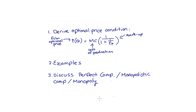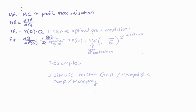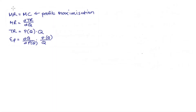So let's start with the first task of deriving that optimal pricing condition. To do this, we need to recall what I've listed in the top left-hand corner of the screen. Firstly, that the firm sets its price such that marginal revenue is equal to marginal cost, and that's in order to maximize profit.